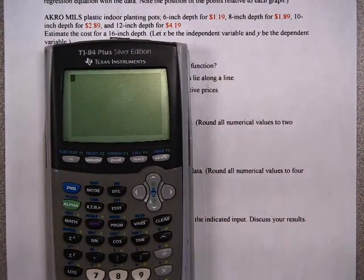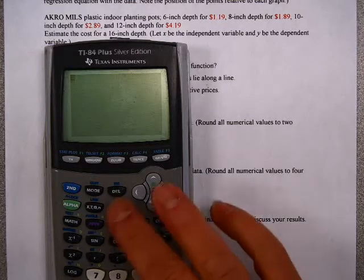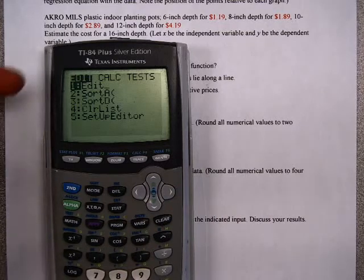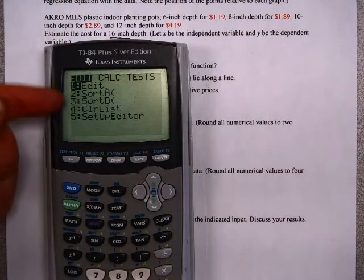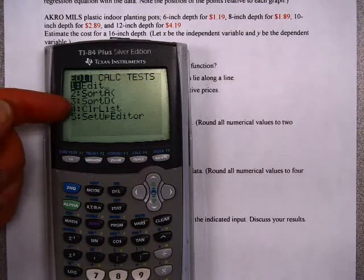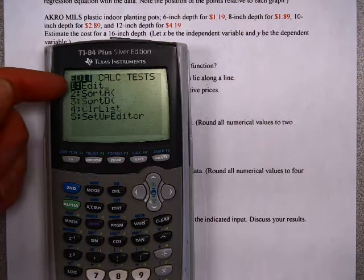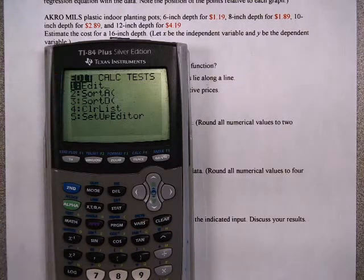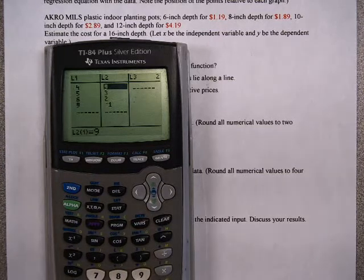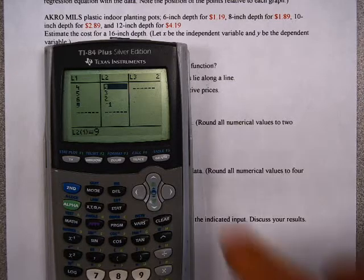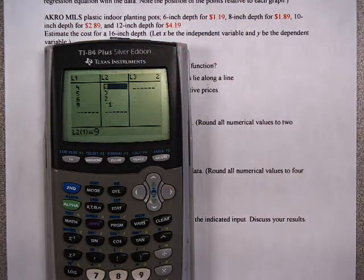To enter data, you need to hit the stat button. If I hit the stat button, I notice that this window comes up: Edit, sort A, sort D, clear list, and setup editor. What's important for us is to enter the data, so we're going to hit number one for edit. You should receive a screen where you have L1, L2, and L3 at the top. If you don't, I want you to come see me and I can reprogram your calculator.